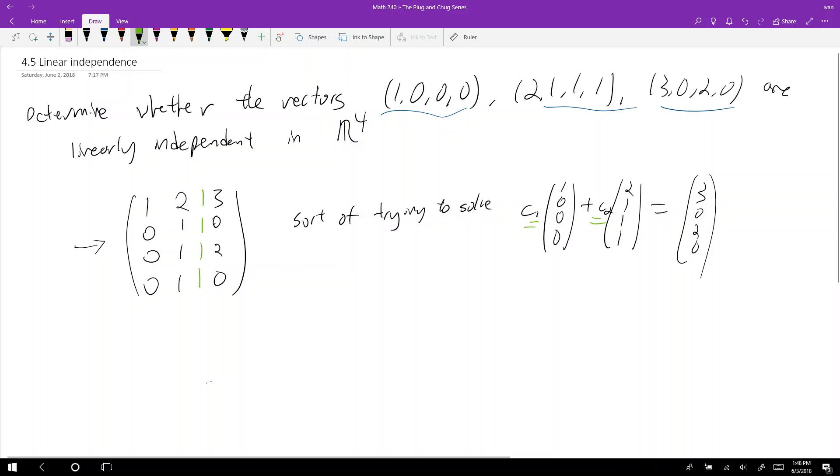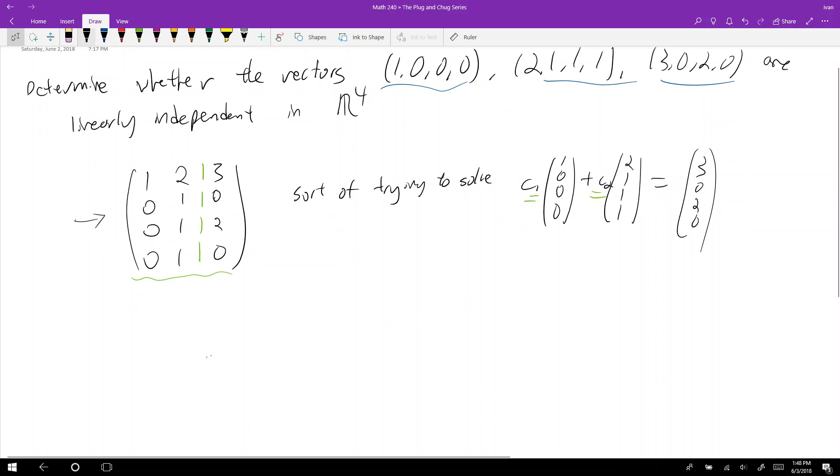So if the system, if this system here is consistent, then they're not linearly independent. If this system is inconsistent, then they are linearly independent. So we want the system to be inconsistent to show independence. And so how we do this? Well, we essentially just row reduce this guy.